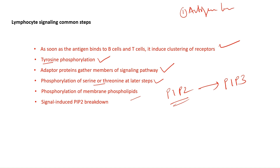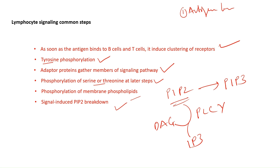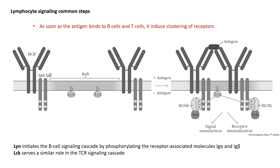Then there is signal-induced PIP2 breakdown. PLC gamma degrades PIP2 into DAG and IP3. So these are the common steps in any signaling pathway in the immune system.